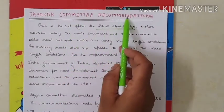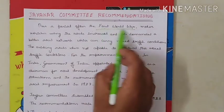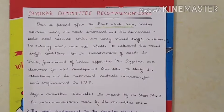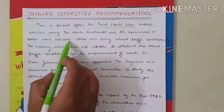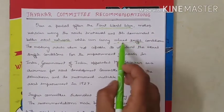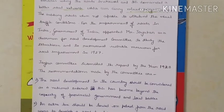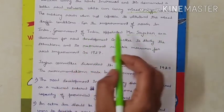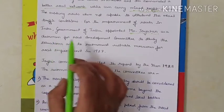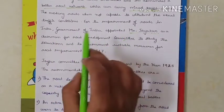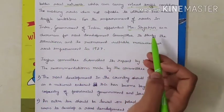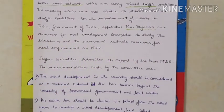JAKA Committee recommendation. After the first World War, motor vehicles using roads increased and the demand for a better road network carrying mixed traffic also increased, as existing roads were not capable of withstanding mixed traffic. The Indian government appointed Mr. JAKA as chairman of the Road Development Committee to study the situation and recommend suitable measures for road development — that was in 1927.